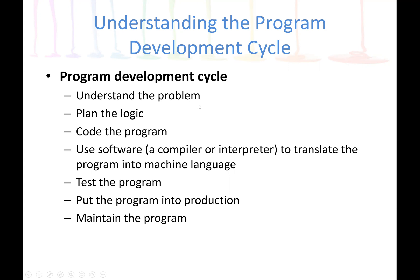Understanding the problem also — in software engineering, we use the term requirement analysis. This is where we are going to list all the specifications of the system. For example, functional requirements — the tasks that the system will perform. Then we have non-functional requirements, which will be the characteristics of the program, such as security, performance, robustness, etc.